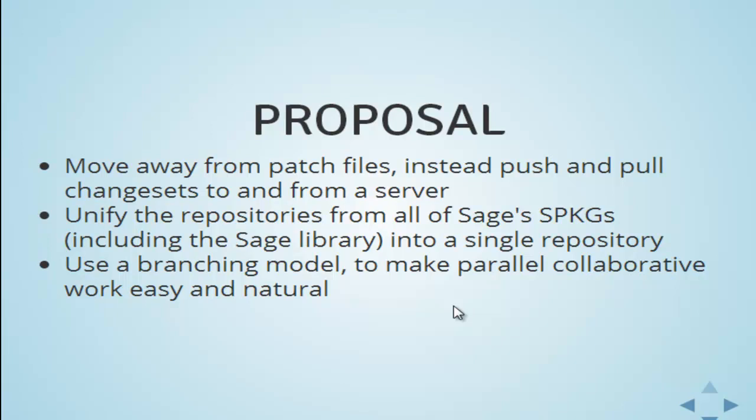The most popular approach nowadays is to use a branching model, where each feature is put on its own separate branch and worked on there until it's ready to be included in the main product. This also helps because each person can have their own branch, working on the same feature but with their own personal copy. Then at a later time, they can easily reconcile the differences between their two copies of that feature. So even within a single feature, branching is helpful.